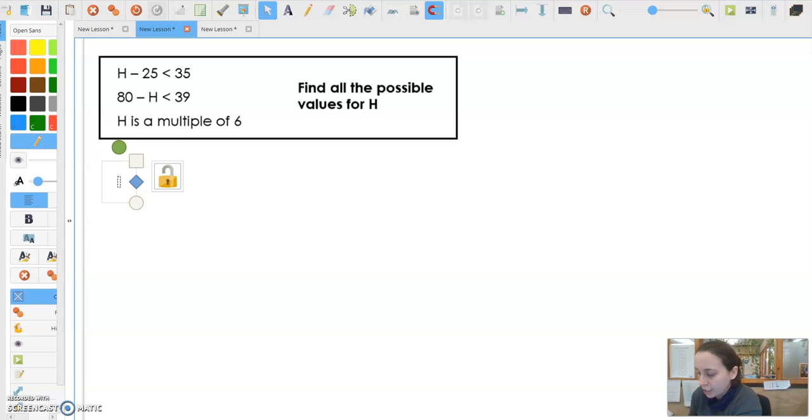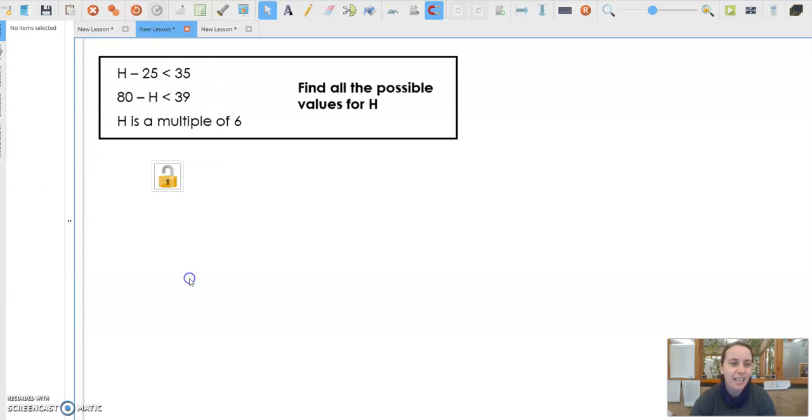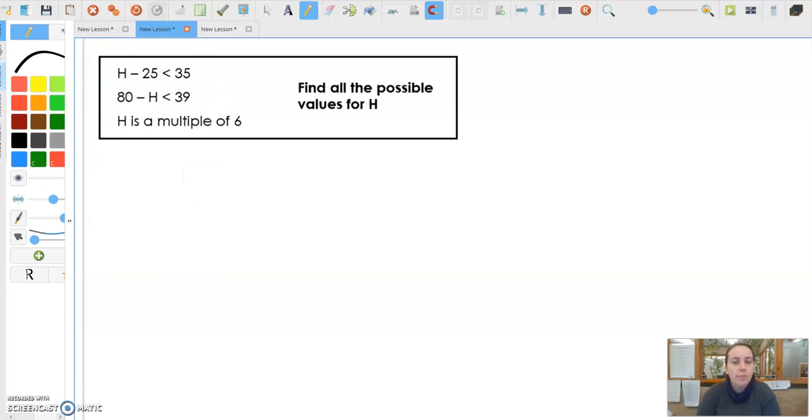Okay, so another daily challenge. I quite like this one. I love a good multiple-based challenge. Let's have a go at working it out. So find all the possible values for H. H minus 25 is less than 35. 80 minus H is less than 39.